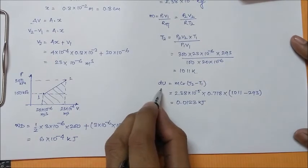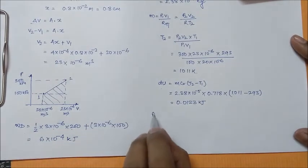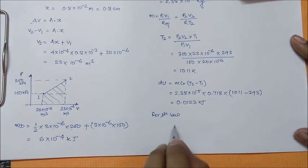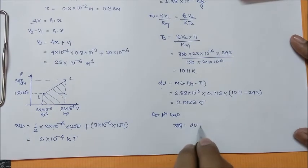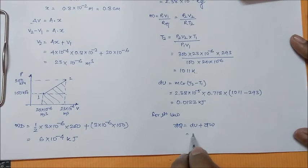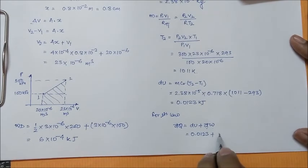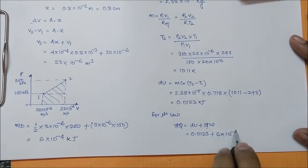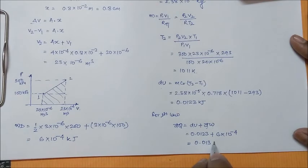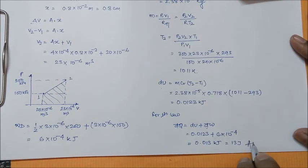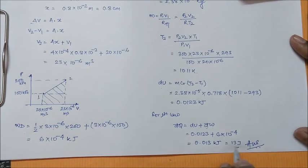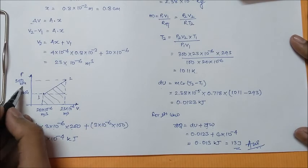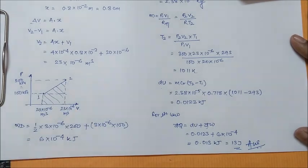Now we know ΔU and work done, so applying the First Law of Thermodynamics: δQ = ΔU + δW. ΔU is 0.0123 kilojoule, and δW (work done) is 6×10⁻⁴ kilojoule. So the answer is approximately 0.0030 kilojoule, or 13 joule. This is the heat that will be transferred to get the pressure to 300 kilopascal at state 2.